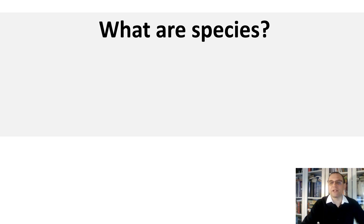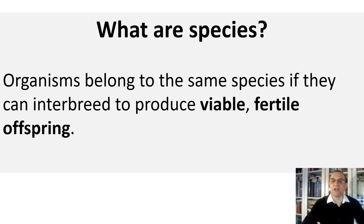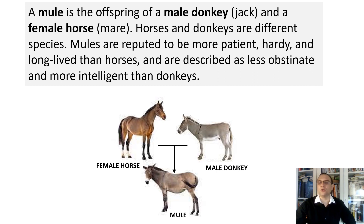We have named many different species — but what is a species? What does it mean to be a species? Organisms belong to the same species if they can interbreed and produce viable, fertile offspring. The key words are viable and fertile. Different species can technically mate, but there will be no viable or fertile offspring. For example, a mule is the offspring of a male donkey and a female horse. Donkeys and horses are closely related but belong to different species, and their offspring — mules — cannot reproduce; they are not fertile.